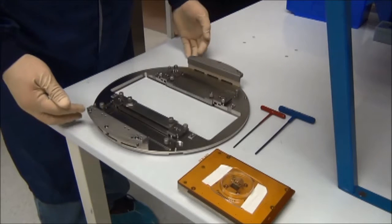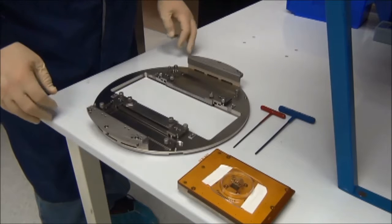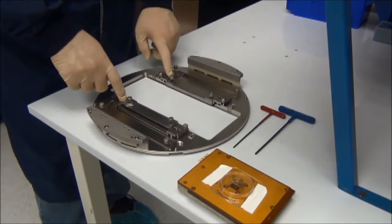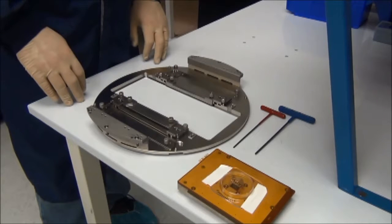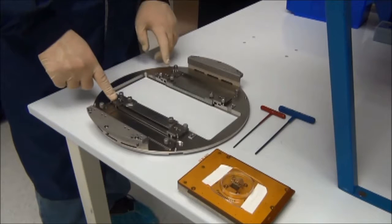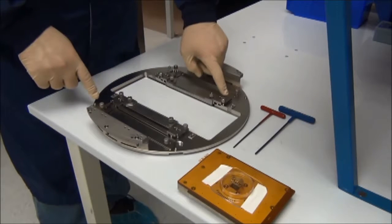Each outer rail also contains two planarization set screws used for tilt adjustment. There are two fully adjustable inner rails used to hold the probe card at the center of the platen opening. Each inner rail is secured to the probe card holder with two thumb screws located at each end of the rail.